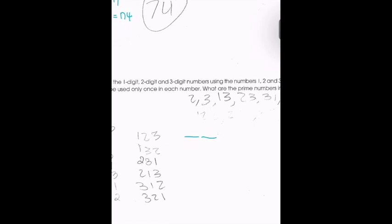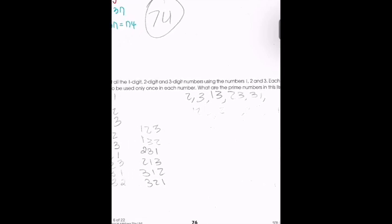For one-digit numbers using 1, 2, and 3, we have 1, 2, and 3. For two-digit numbers, if the tens place is 1, possible numbers are 12 and 13. If the tens place is 2, possible numbers are 21 and 23.